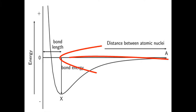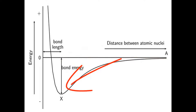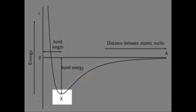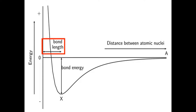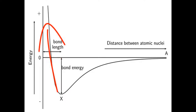As they move closer to one another, their amount of chemical potential energy decreases. They become more and more stable until we reach the point where they are the most stable — that's where they'll settle, because that's where they're most stable. At that point, the two nuclei of the hydrogen atoms are a bond length apart. Now if they get closer to one another than that, their amount of chemical potential energy increases and they become less stable.